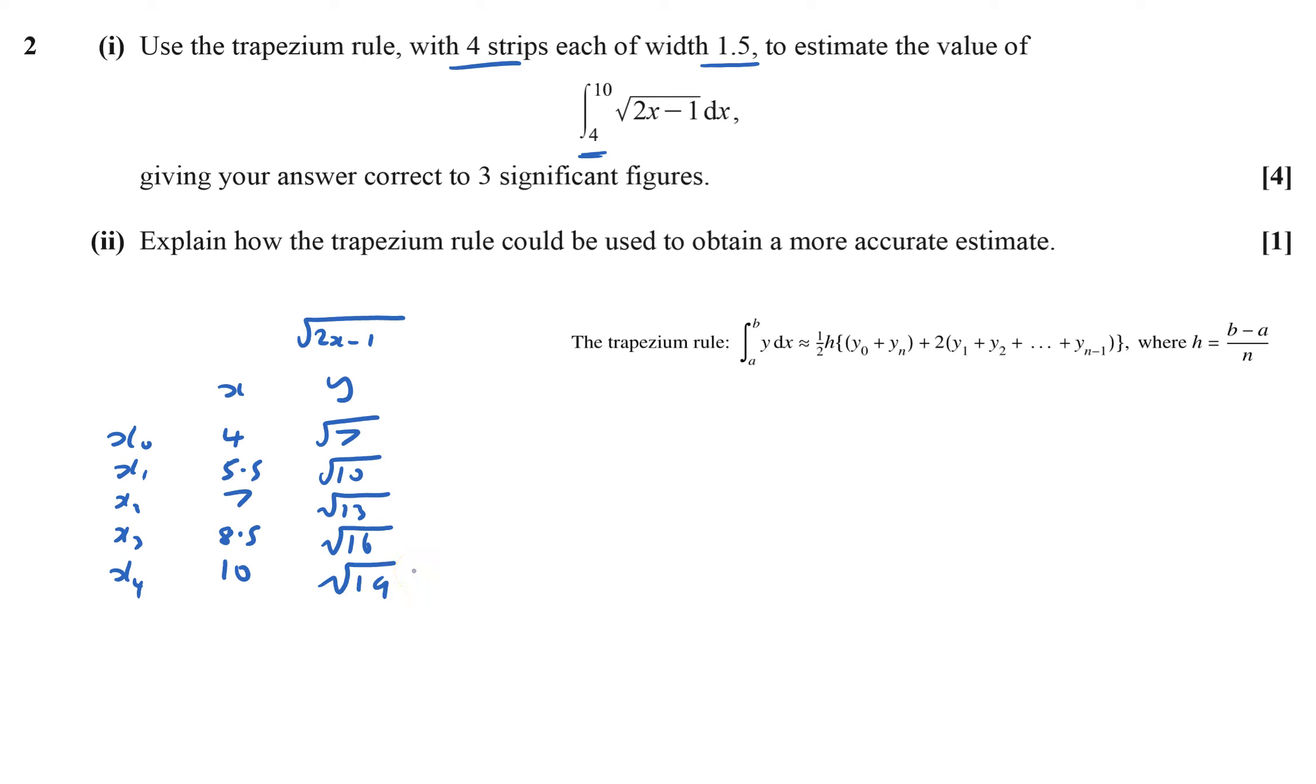Now having done that, I just have to put it into the formula. So the area is approximately equal to 2.5 times the h is the width, so that's 1.5. And then I need y0, the first and the last, so that's root 7 plus root 19.